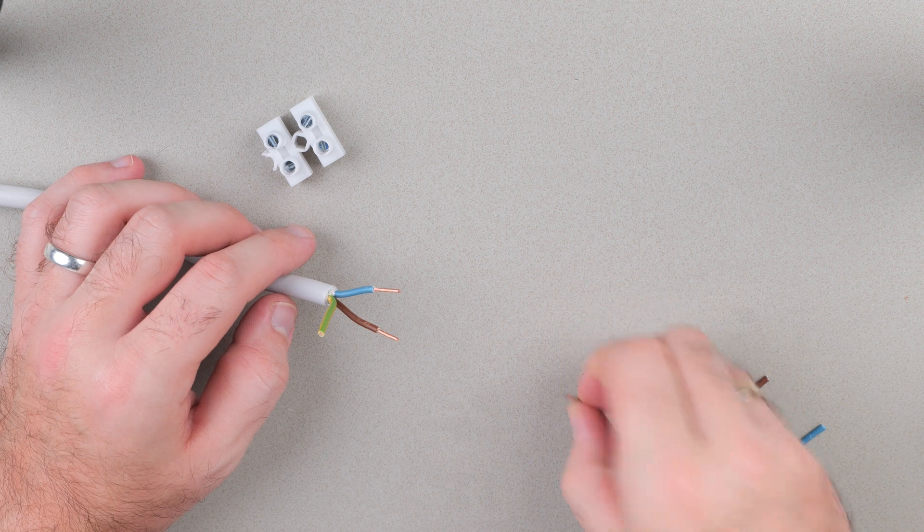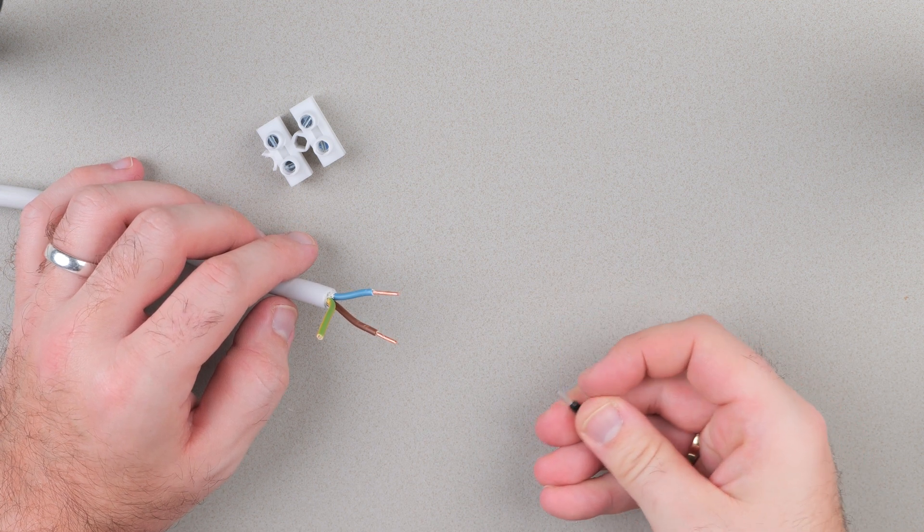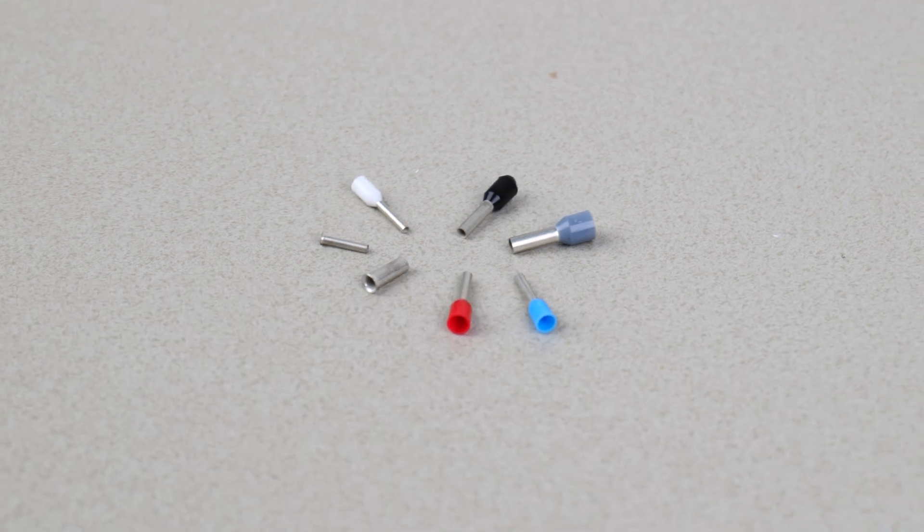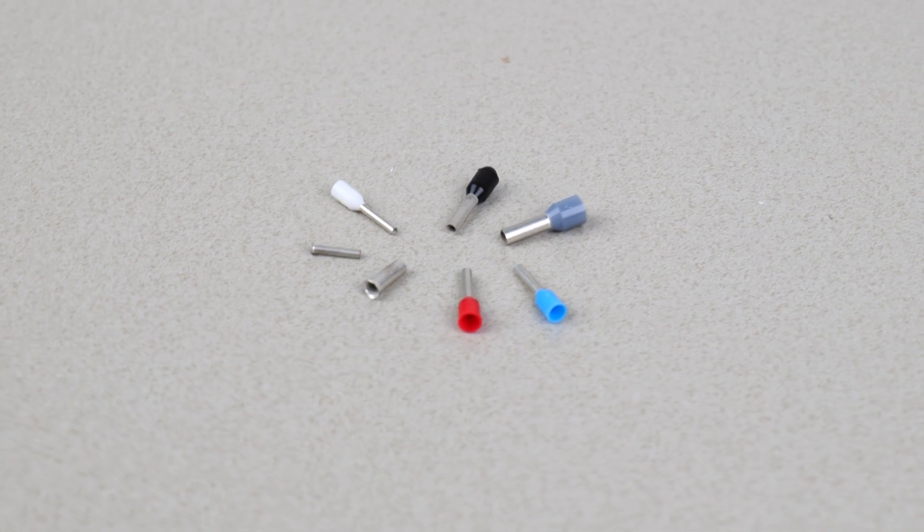Now that you have the blank wire, you are able to determine the required size of the ferrule you need. Ferrules have standardized sizes that are represented by different colors.